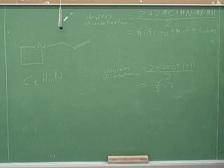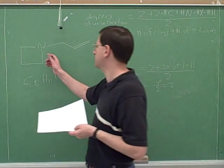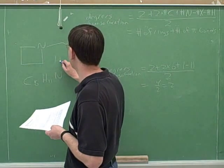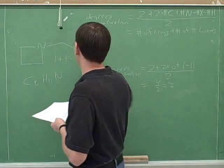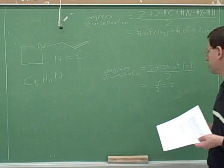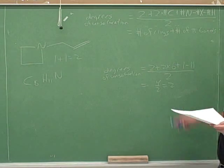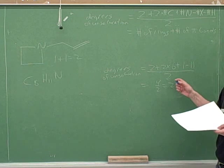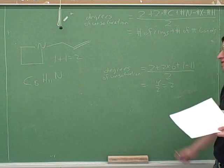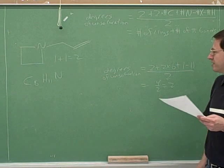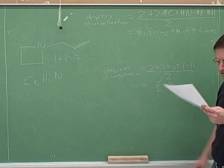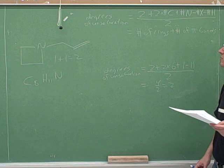And what do those two degrees of unsaturation tell us? Two rings. There's one ring and one. Or there's two rings. Right. How many rings does this molecule have? One. And how many pi bonds? One. Right. Now, if we didn't already know the structure, what this would tell us is maybe there's two rings. Or maybe there's one ring and one pi bond. Or maybe there's two pi bonds. So it doesn't tell you exactly what the structure is, but at least it gives you a clue. Once again, we've confirmed that the degrees of unsaturation formula works for a new compound.